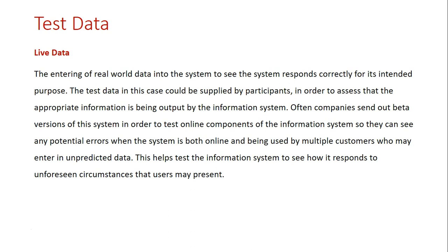The next type is live data testing. In this scenario we're entering real-world data that the system is likely going to be receiving. This data is supplied by participants in order to assess that the appropriate information is being output by the information system — whether the participant is entering it directly into the system or supplying it to the project team. We're using real-world data to ensure the system is capable of doing what it has been developed to do. Often companies send out beta versions of the system to test online components, so they can see potential errors when the system is online and being used by multiple customers who may enter unpredicted data.